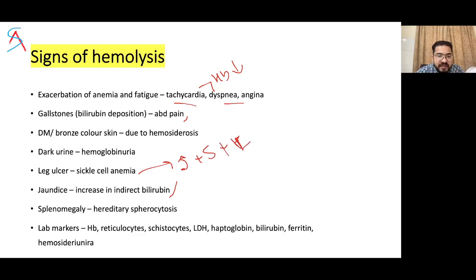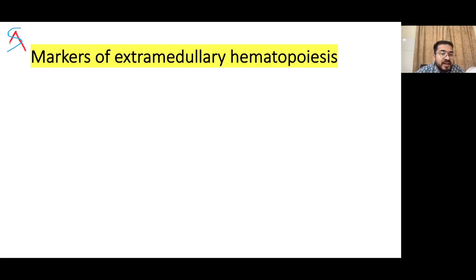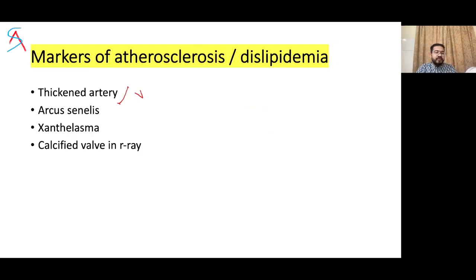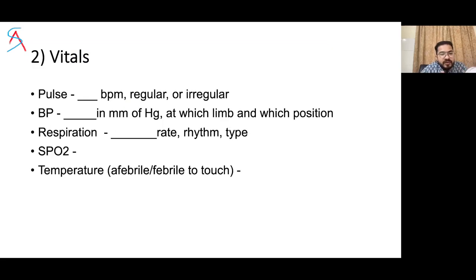In sickle cell anemia, there may also be leg ulcers or bone necrosis. Splenomegaly can occur in hereditary spherocytosis. When palpating the vessels for pulse on all four limbs, note whether the artery is thickened or not. Also look for arcus senilis and calcified valves on chest X-ray as markers of atherosclerosis.